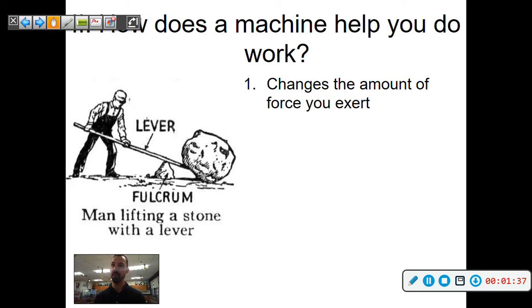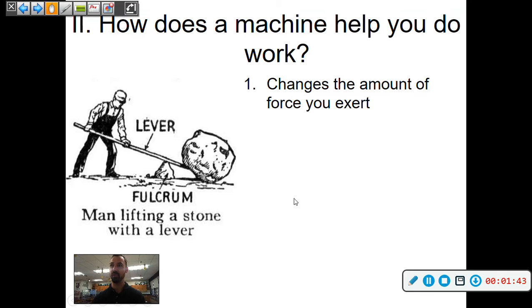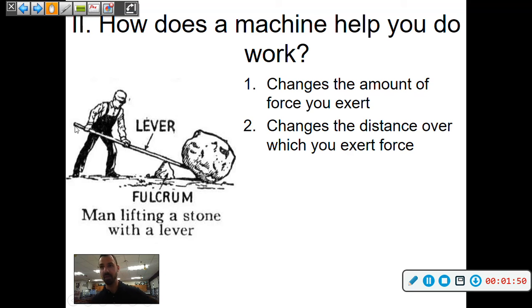So how does a machine help you to do work? It changes the amount of effort you exert. That's the first thing. It changes the distance over which you exert the force. So seen with this lever here, which you can put under a rock or a boulder like this, fulcrum is like a changing point where it changes direction. So you need that to get the extra leverage on the rock.